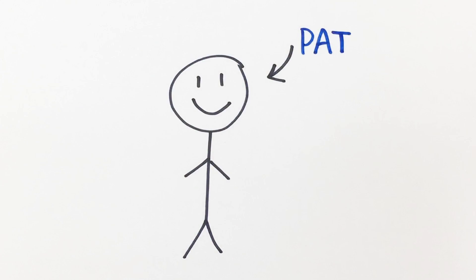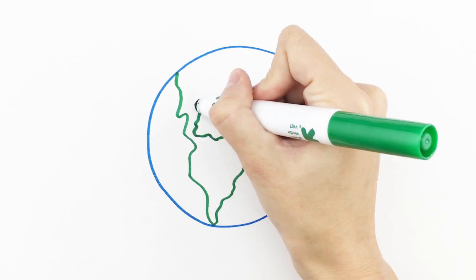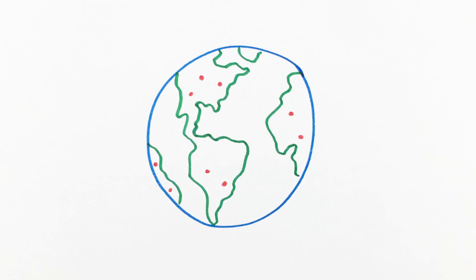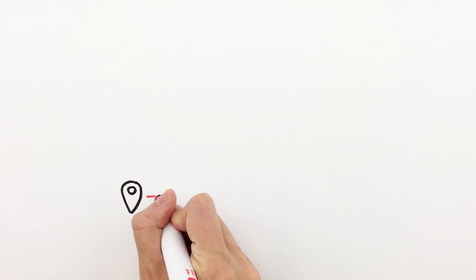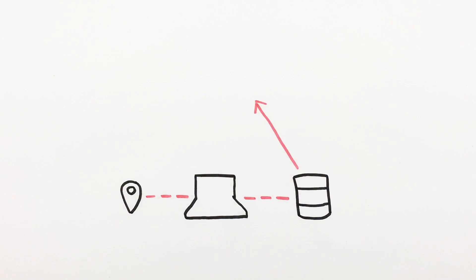This is Pat. He's a super smart engineer supporting the IT needs of a multinational company. His job is to make sure that all data from all things, from all locations, is securely, reliably, and regularly delivered to headquarters in real time.